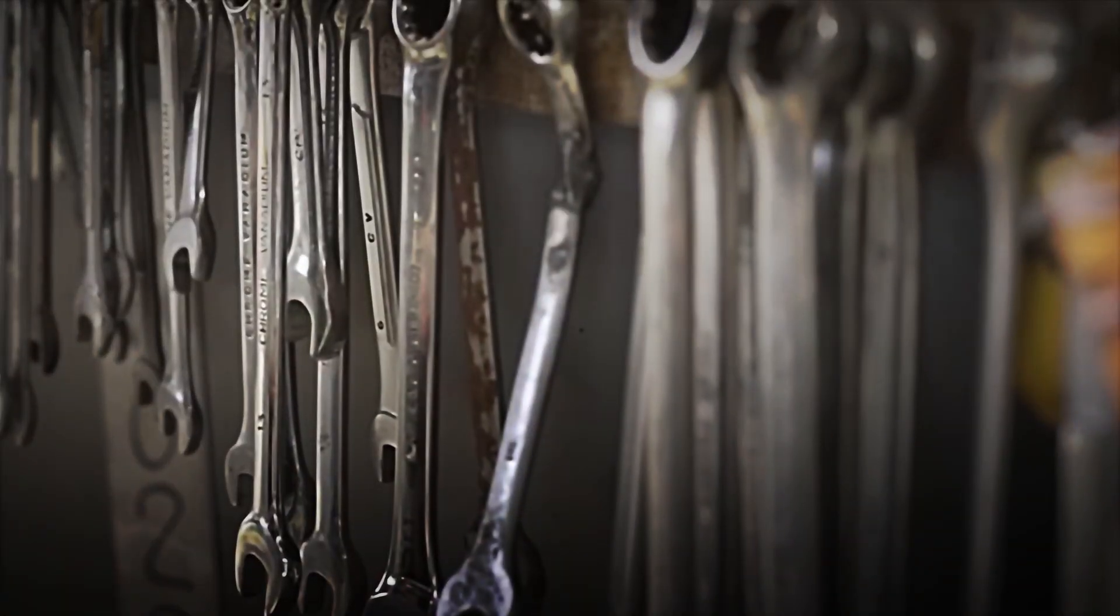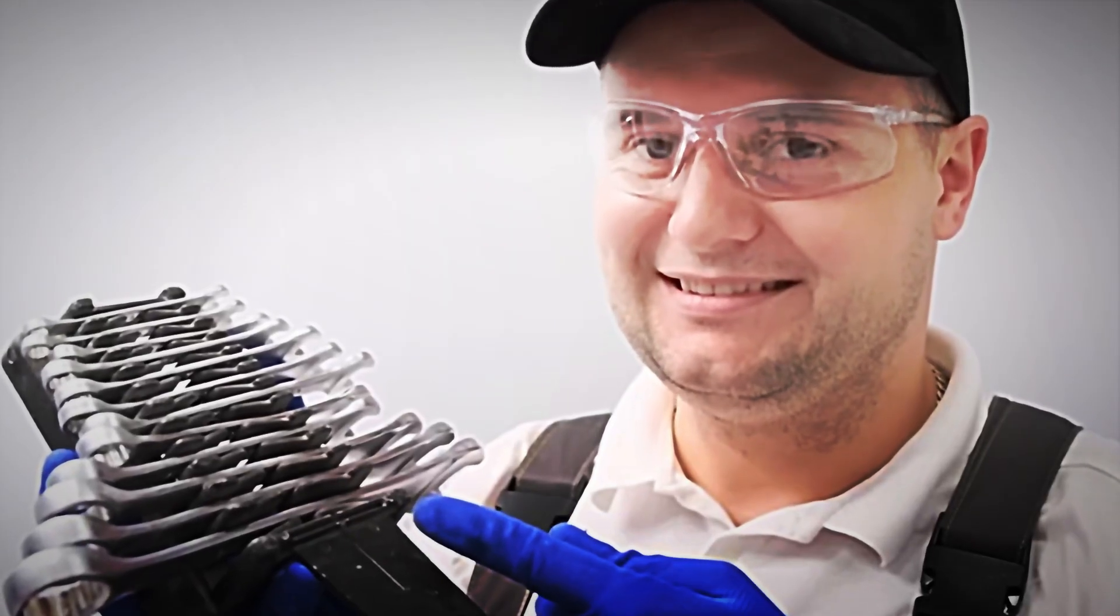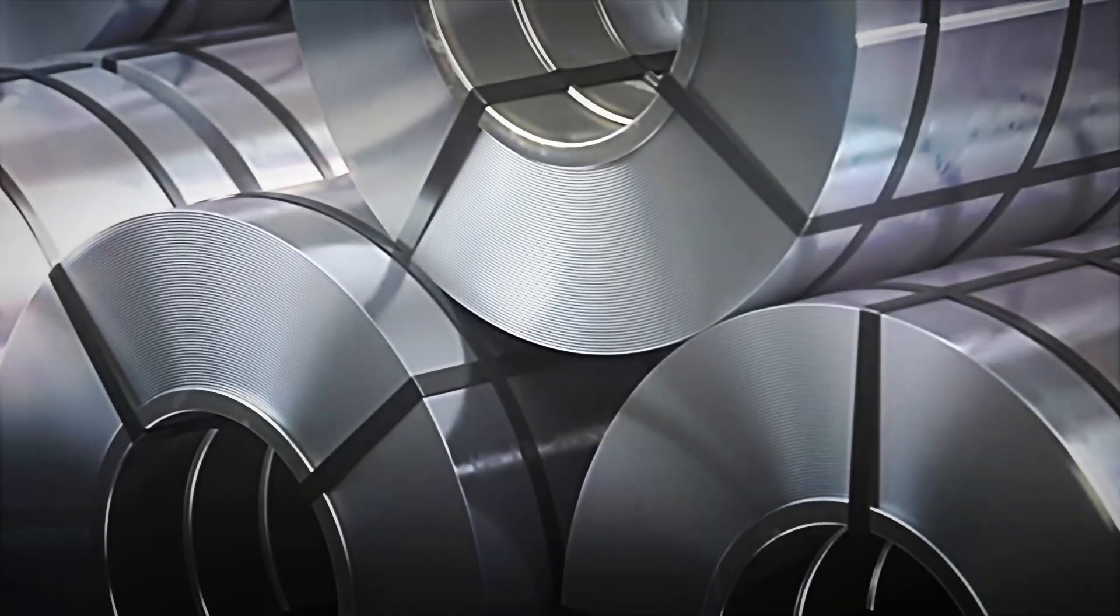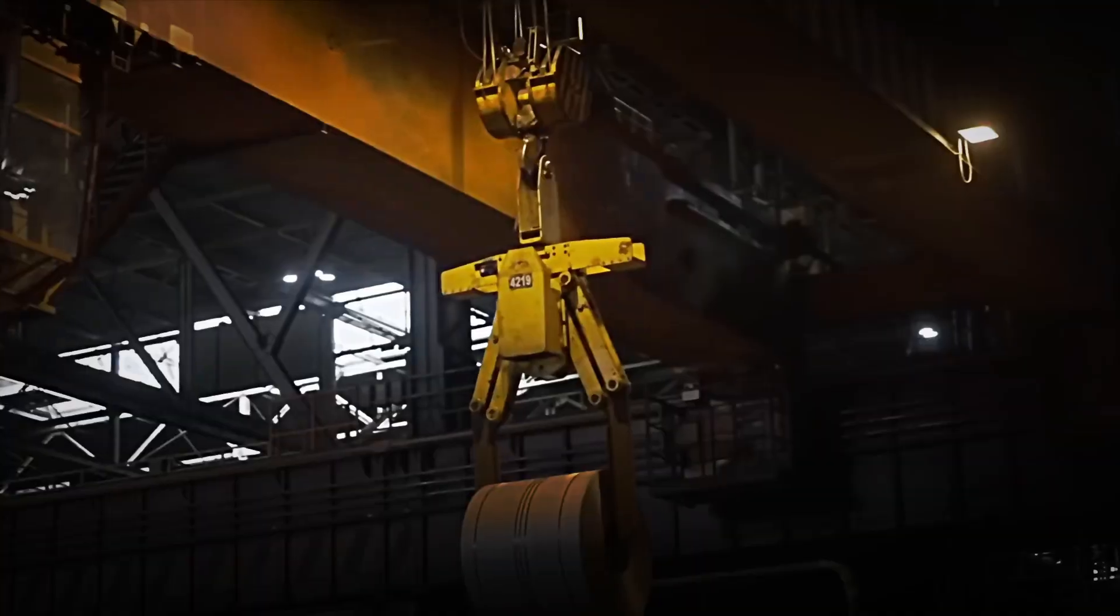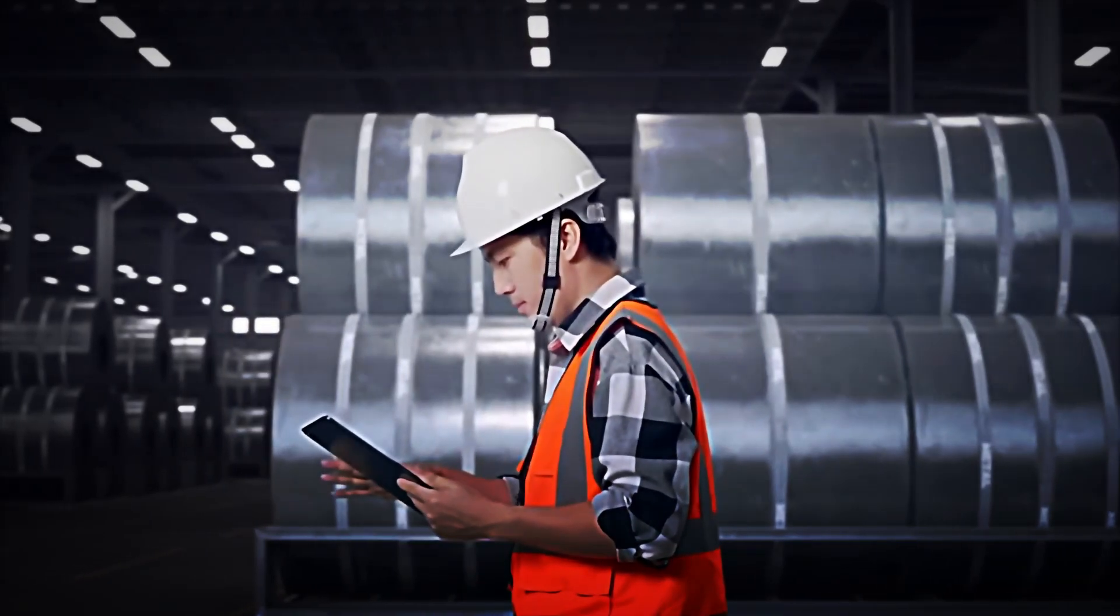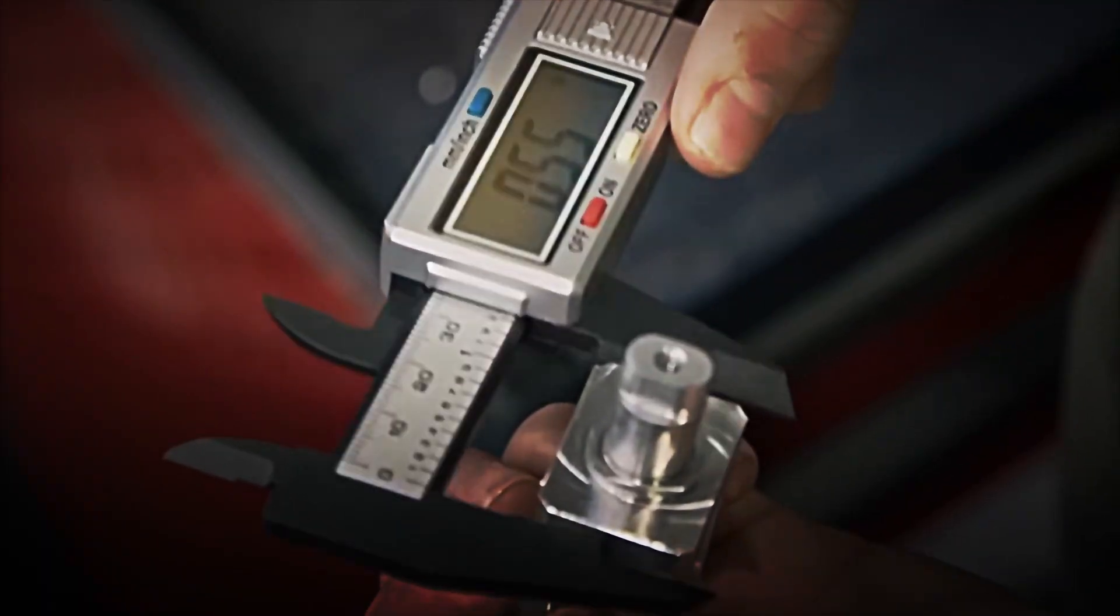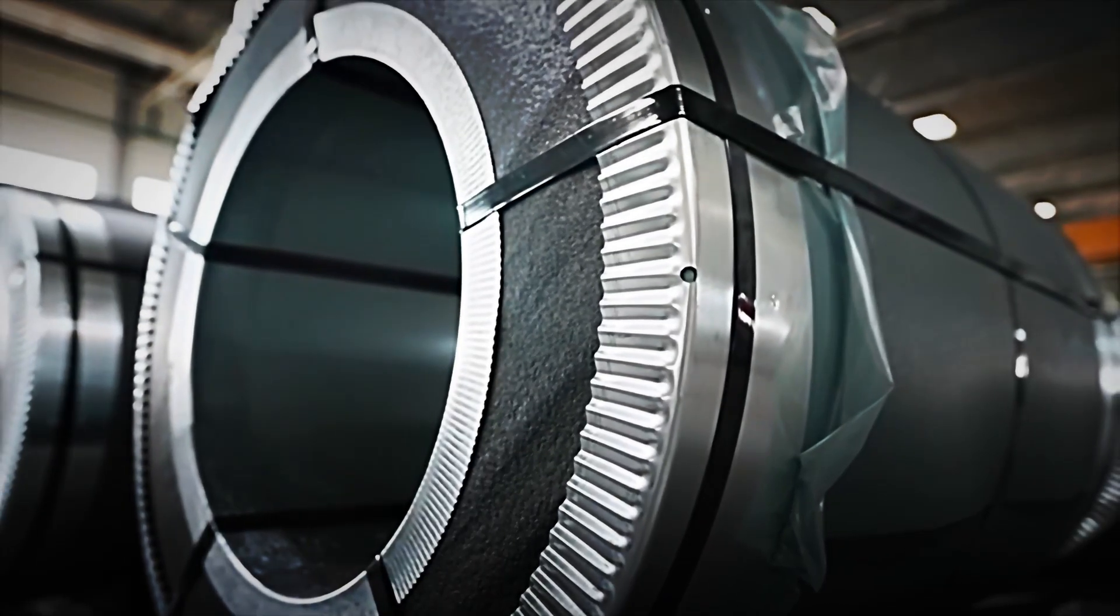The journey begins long before the key even exists. It all starts with the arrival of steel in the form of bars or thick wires known as wire rod. Each delivery is unloaded, sorted, and identified with codes that allow its origin to be traced at every stage of the process.